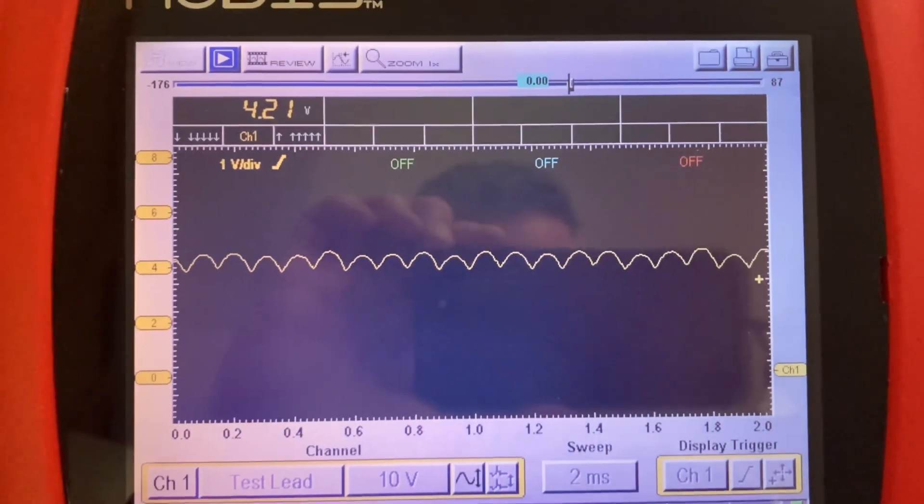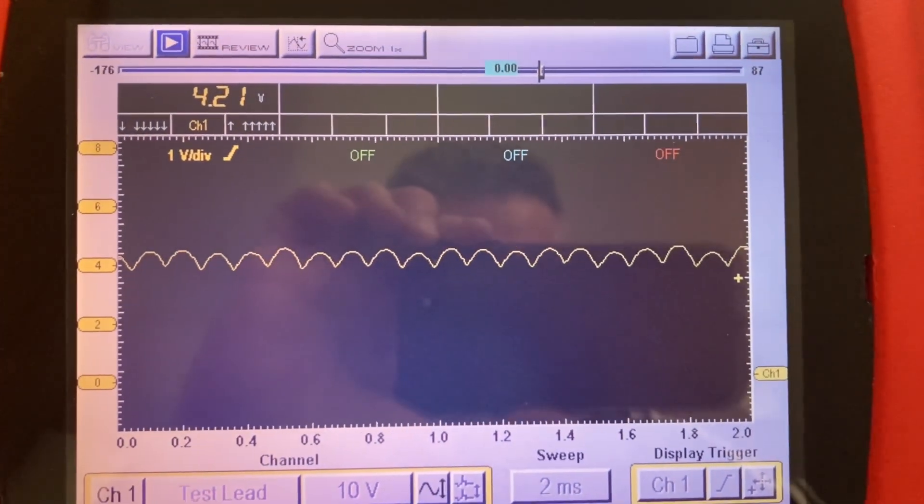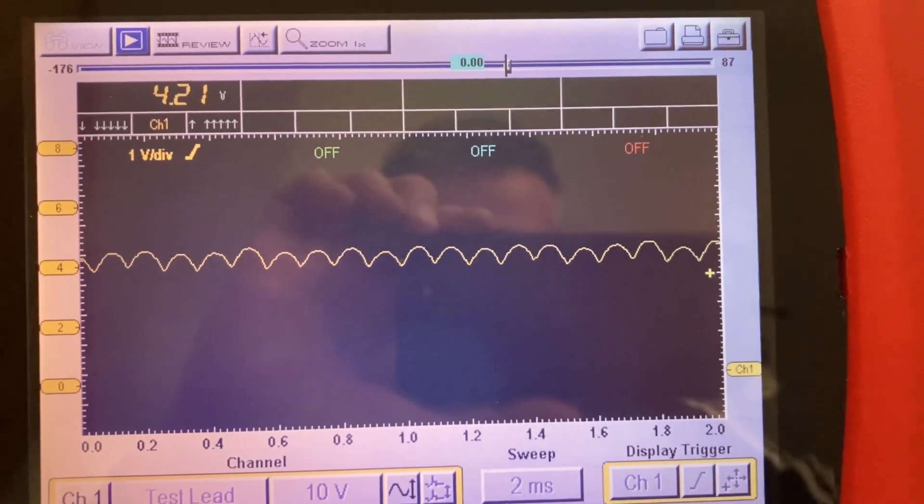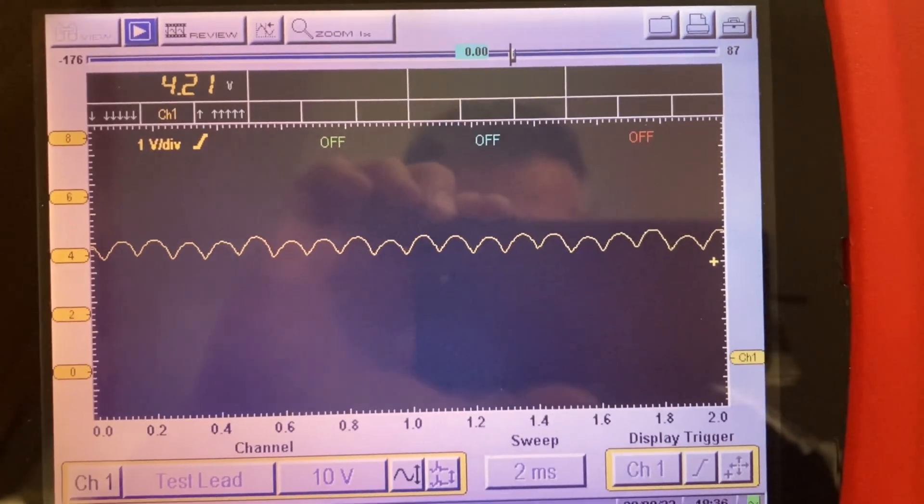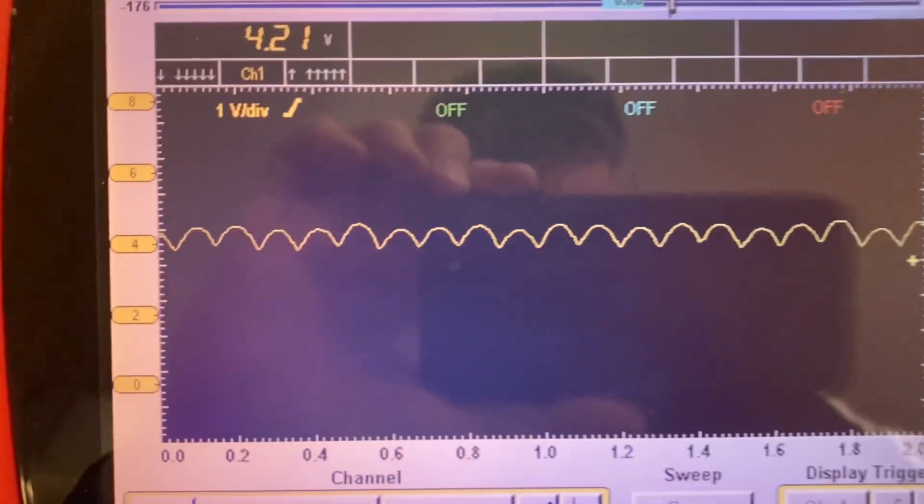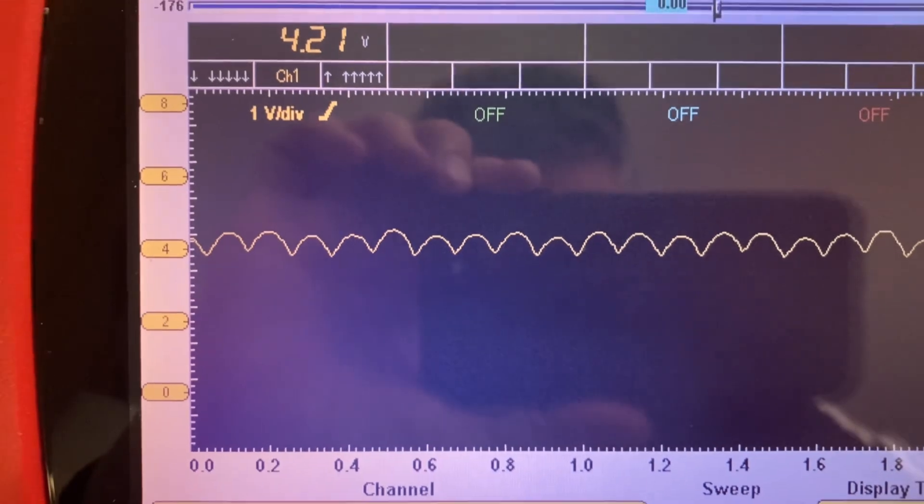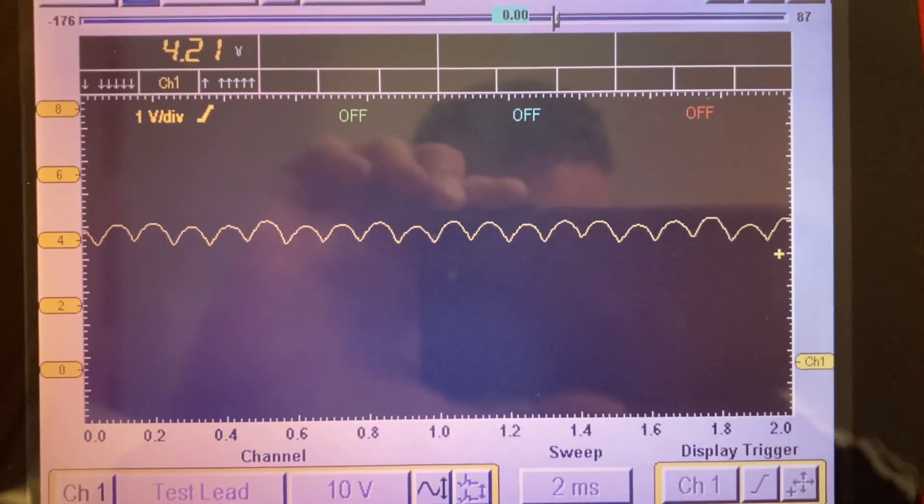So what we have here is essentially the ripple that we're looking at on the scope. You can see again it's just over four volts.